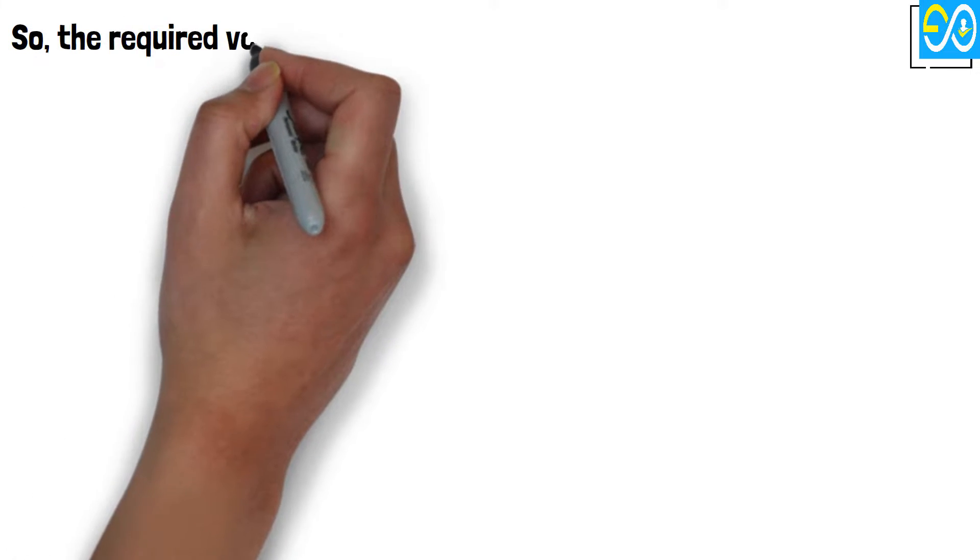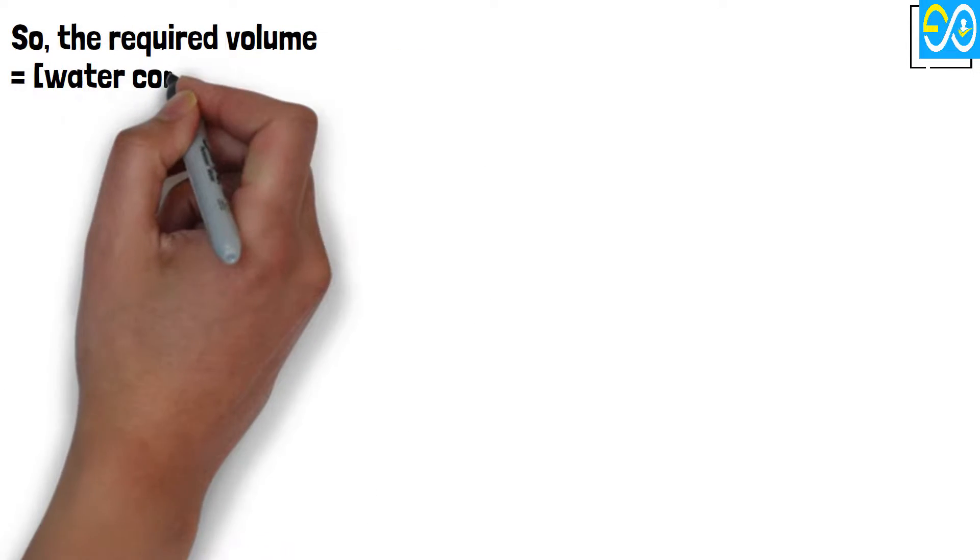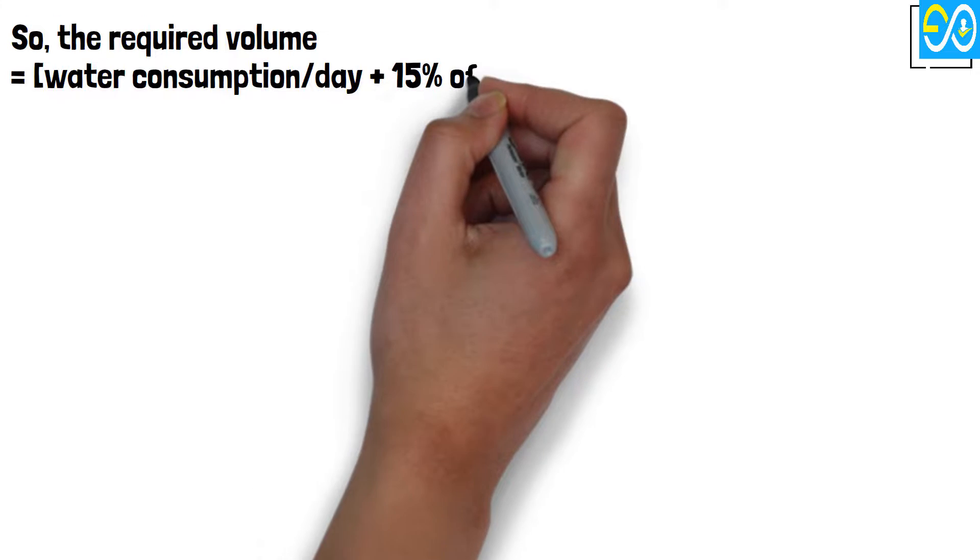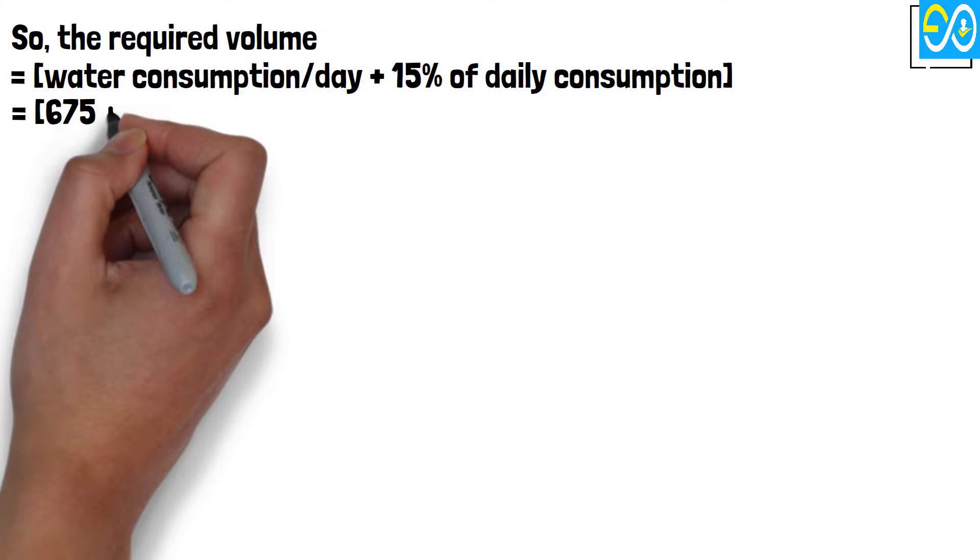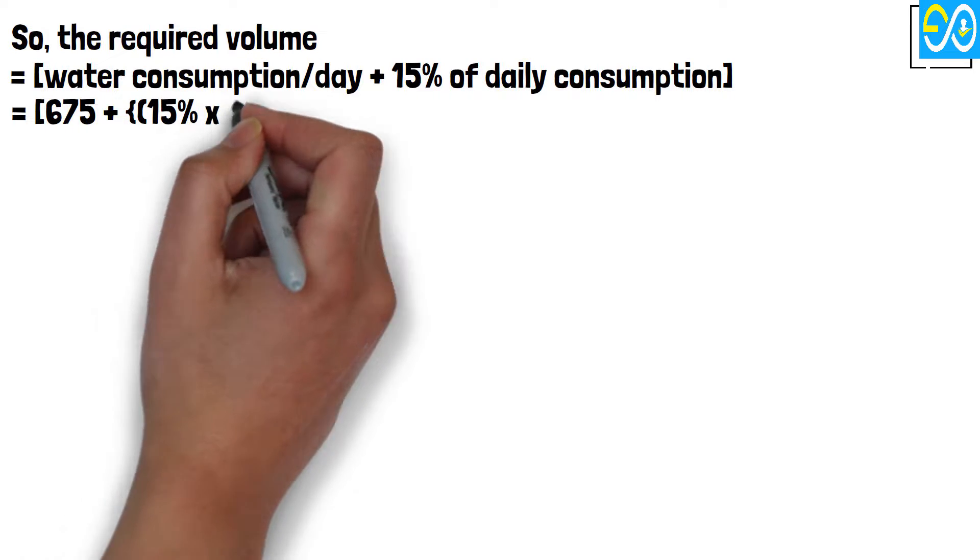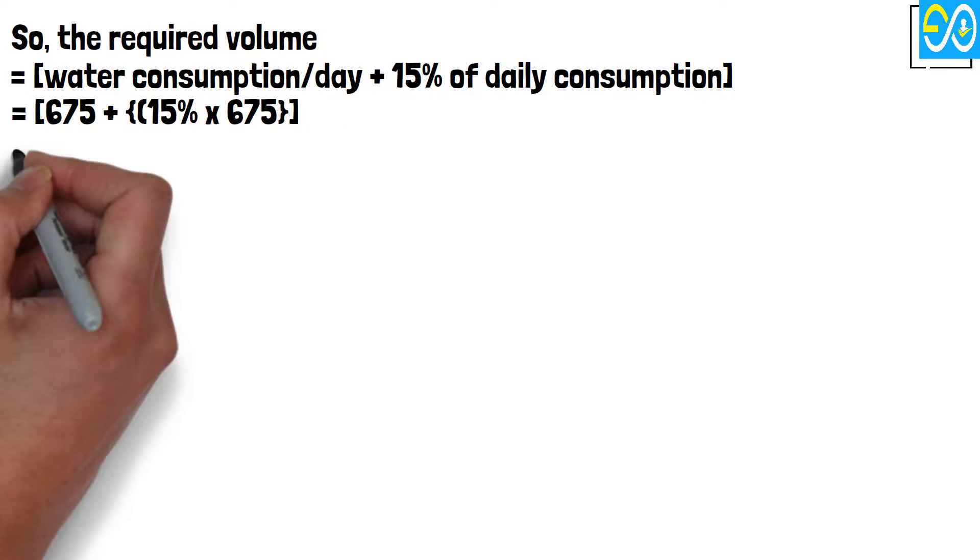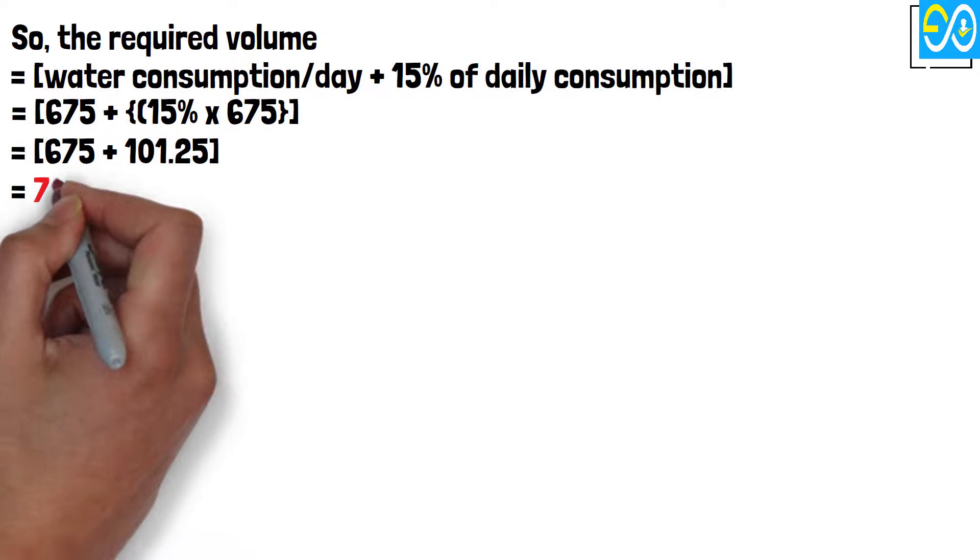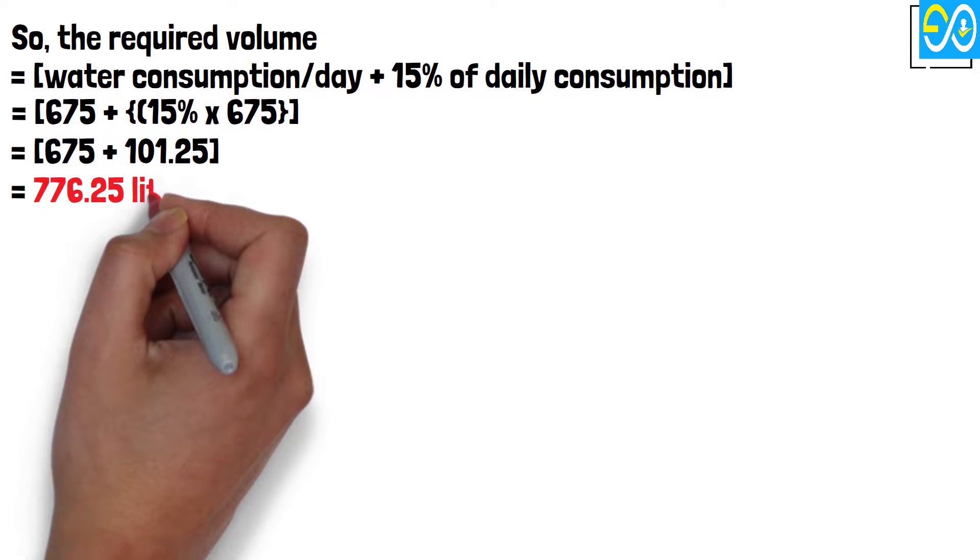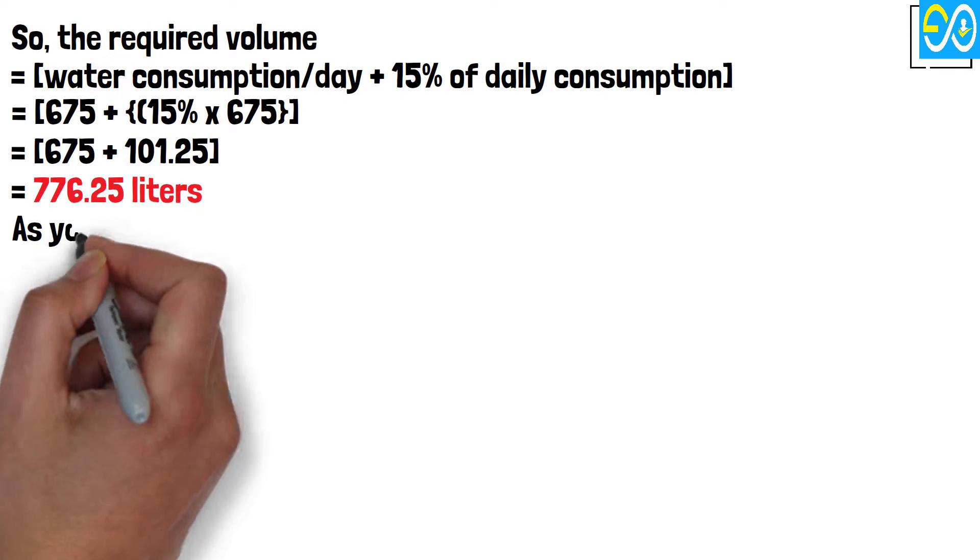So, the required volume equals water consumption per day plus 15% of daily consumption, which equals 675 plus 15% times 675, equals 675 plus 101.25, equals 776.25 liters.